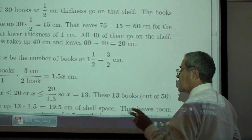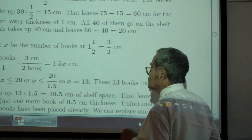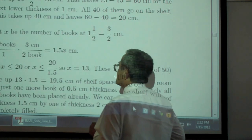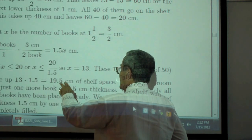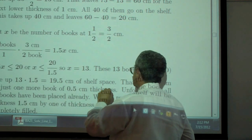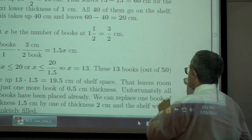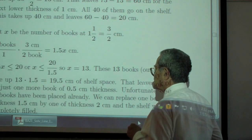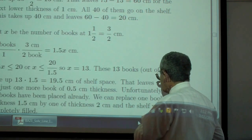These 13 books out of 50 take up 19.5 centimeters of shelf space. That leaves room for just one more book of 0.5 centimeters thickness.